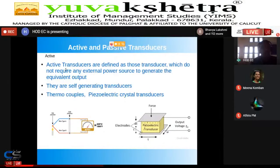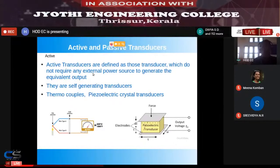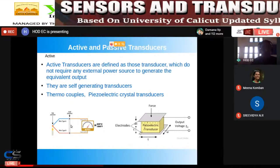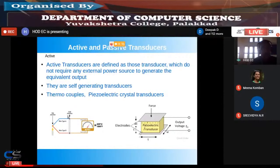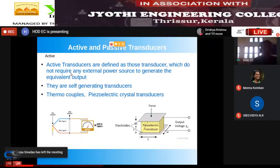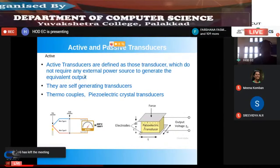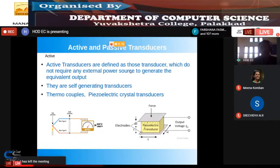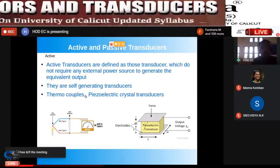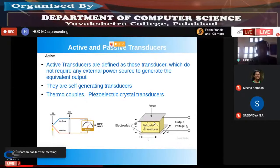Active transducers are defined as those which do not require any external power source to generate the equivalent output — they are self-generating. The thermocouple is an example: without any external help it can convert and even generate voltage by itself. Another example is the piezoelectric crystal transducer.